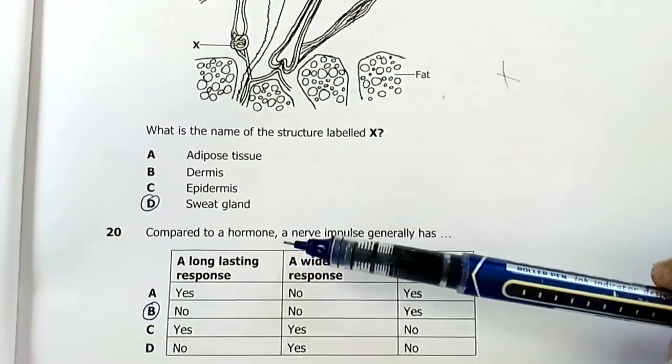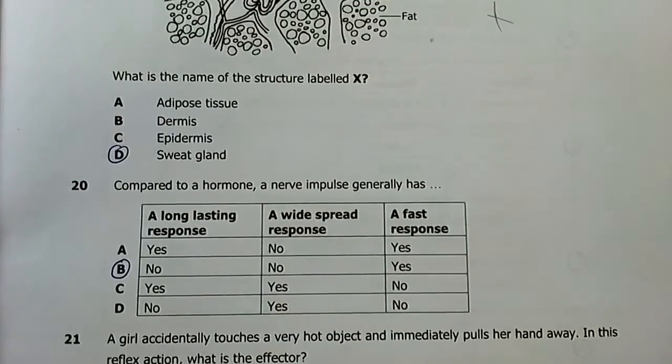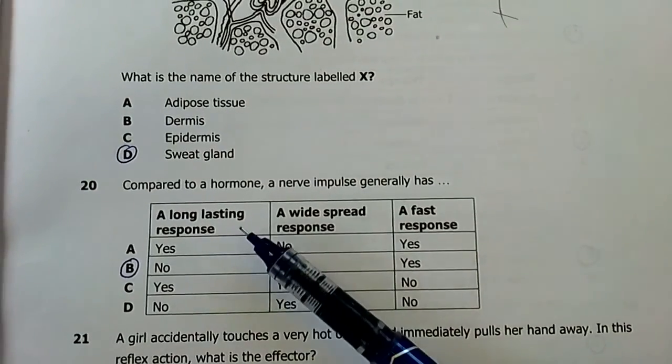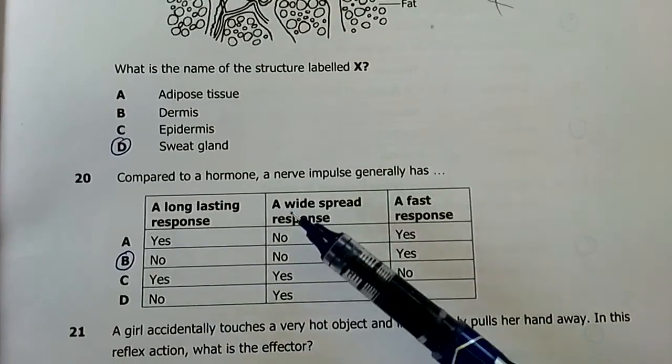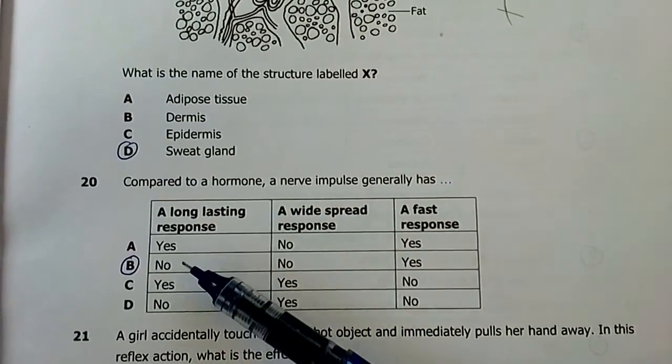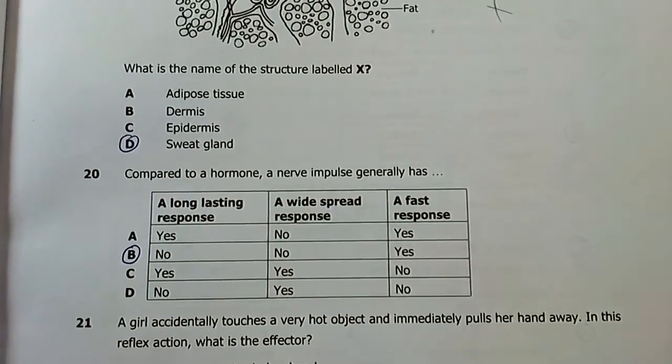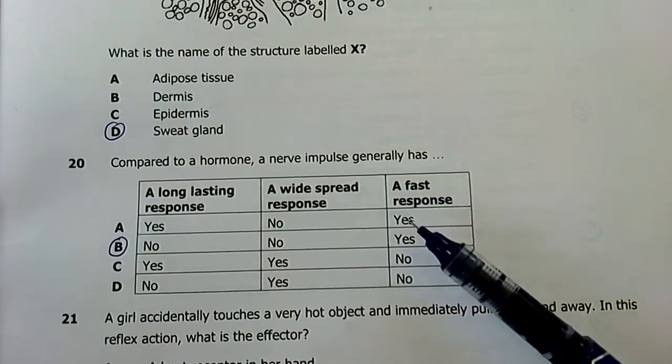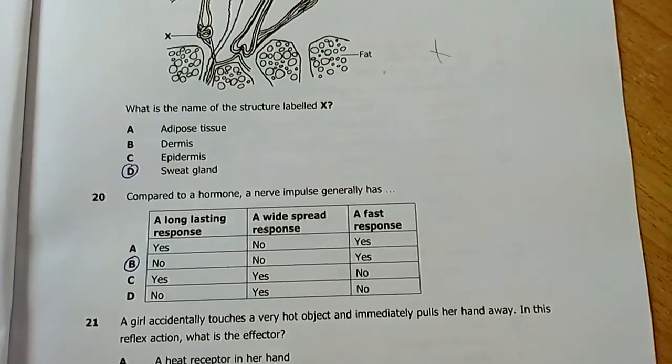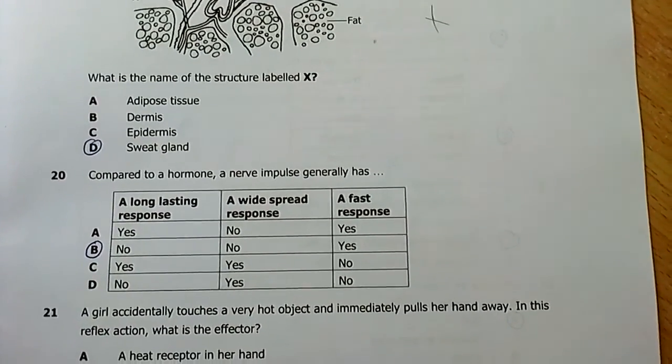Question twenty, my last question for this session. Compared to a hormone, a nerve impulse generally has a long-lasting effect? No. Widespread response? No. Nerve responses are specific and they don't really last long. Hormones last longer because they have a half-life. A fast response? Yes, nerve responses are quite quick. Our best answer is B. I end here for this session. I'll see you in the next video and do the other 20 questions. For now, bye bye and have a good day.